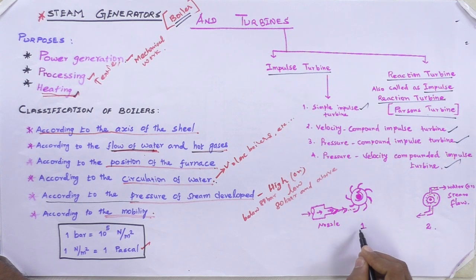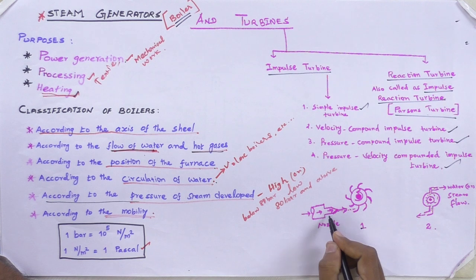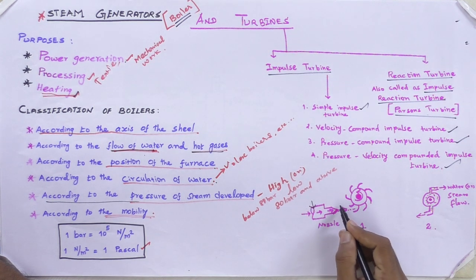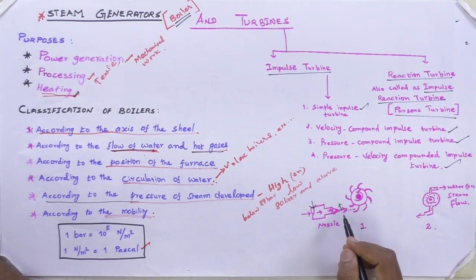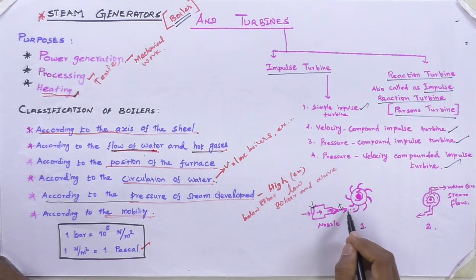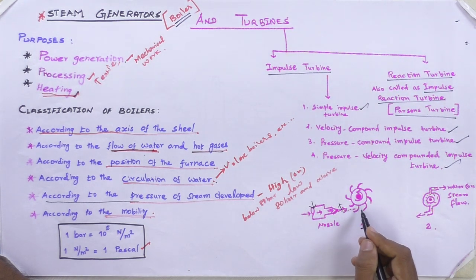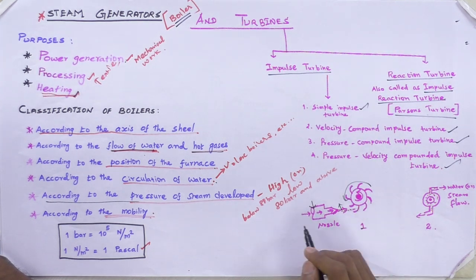In an impulse turbine, when the nozzle takes place, the pressure drops and the velocity of the flow of fluid — whether in gaseous or liquid state such as water or steam — is increased. The velocity of the jet is increased and it hits the turbine blade. The turbine blades are hit by this flow of steam, causing the turbine to rotate. This is called an impulse turbine.